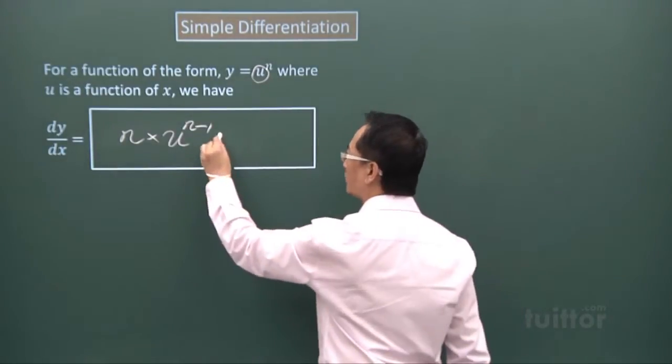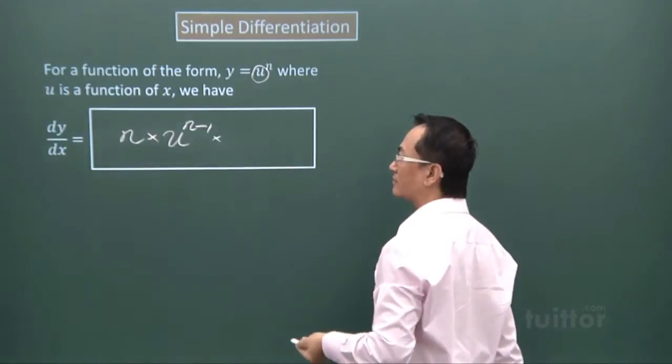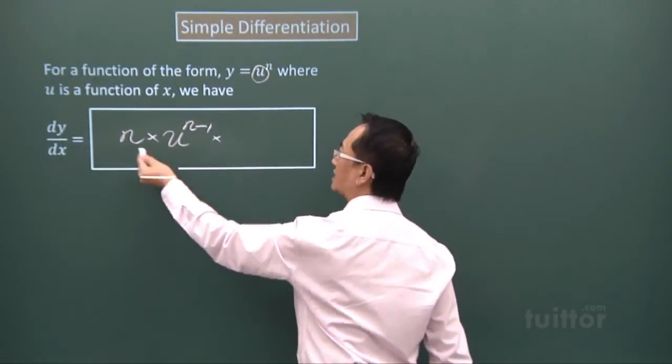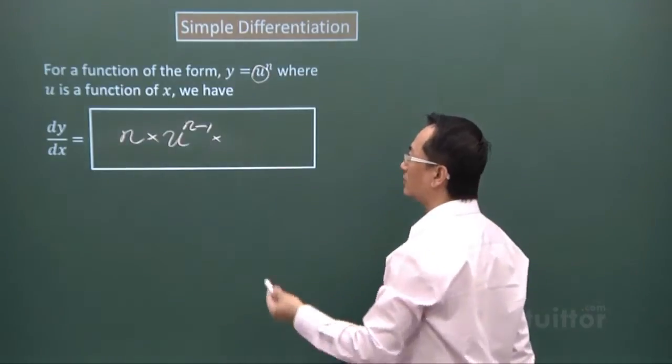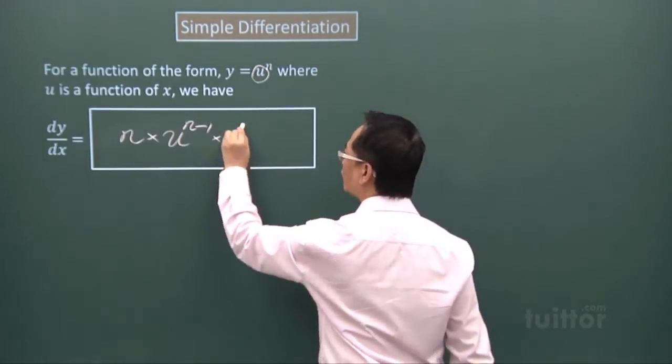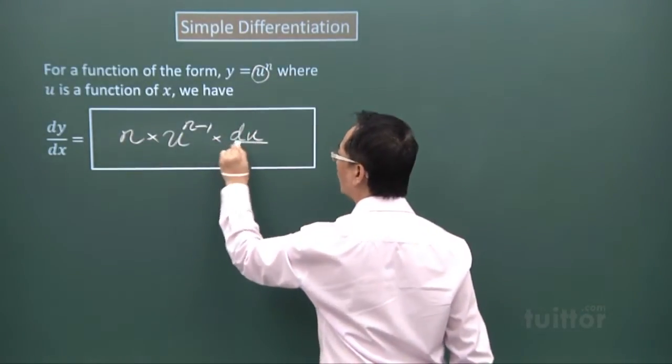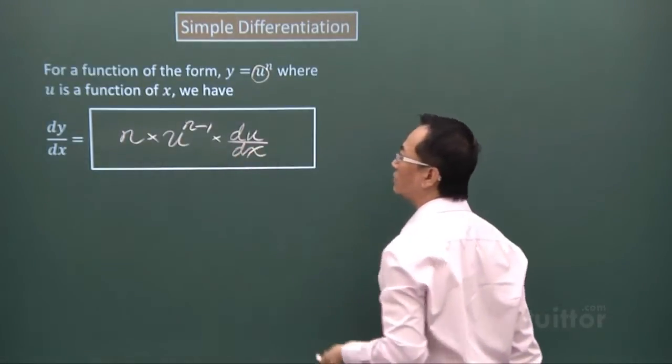Next, you multiply to du/dx because u is a function of x, so you will have to differentiate u with respect to x.